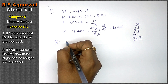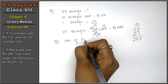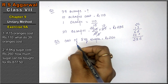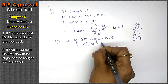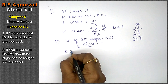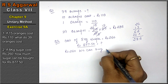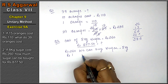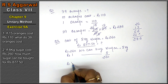Question number two: if 8 kg of sugar costs rupees 260, how much sugar will we get for rupees 7.50? Cost of 8 kg of sugar equals rupees 260. We need to find the quantity. We will take it as 8 upon 260, and then multiply by 7.50.